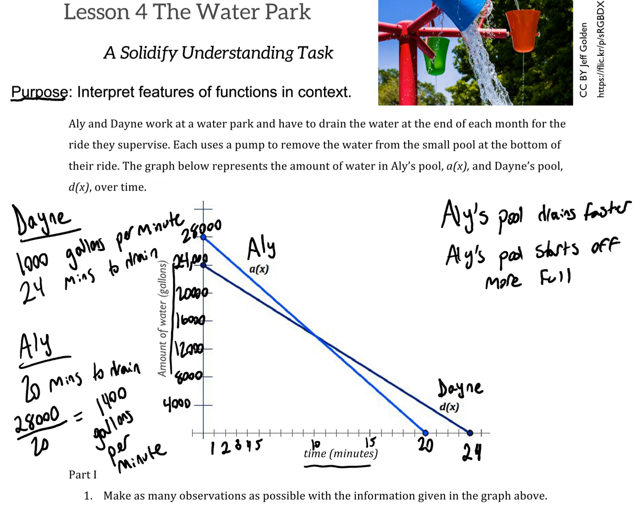So, now we've labeled the graph based on all the information we've been given. And now we can write equations for each of the pools and their draining. So, Dane's equation, this is a linear function. So, it started at 24,000, and it's draining at 1,000 gallons per minute. So, Y equals 24,000 minus 1,000X.